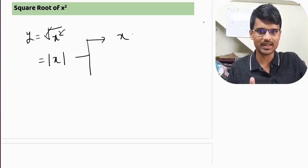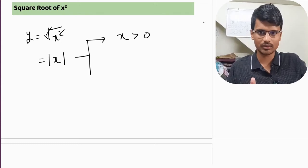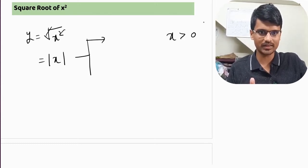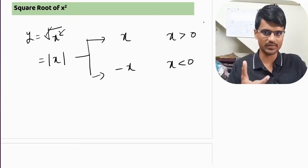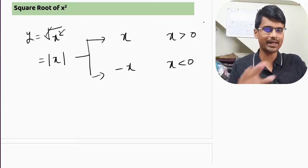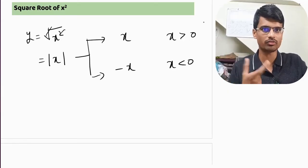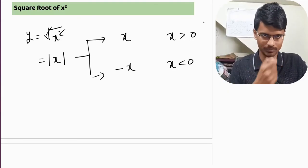Here there will be two cases. Say x is greater than zero. In that case, when x is greater than zero, then directly I can write it as x. But when x is less than zero, the answer will be minus x. This is how we get two cases. Whenever we have square root of x square, do not directly cancel it. Always take modulus of x and depending on the value of x, the answer will be there.